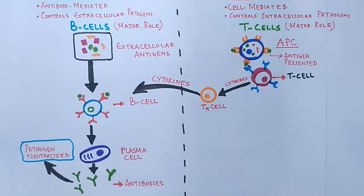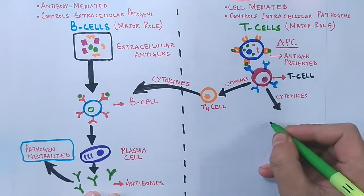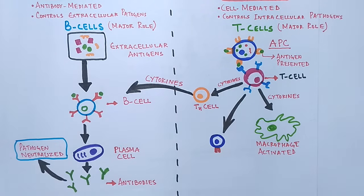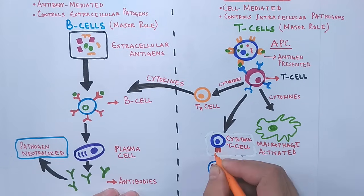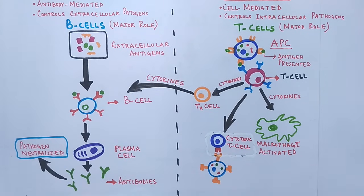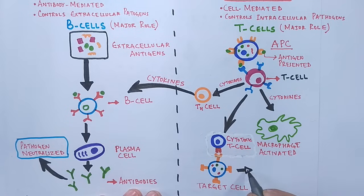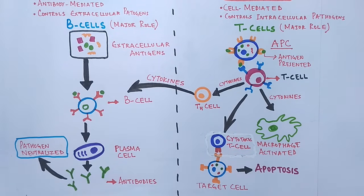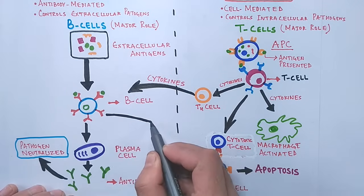After that, the T-cell transforms into a cytotoxic T-cell, and this cytotoxic T-cell induces apoptosis in the infected cell and eliminates the intracellular pathogen via apoptosis. This is how the cell-mediated immune system works.